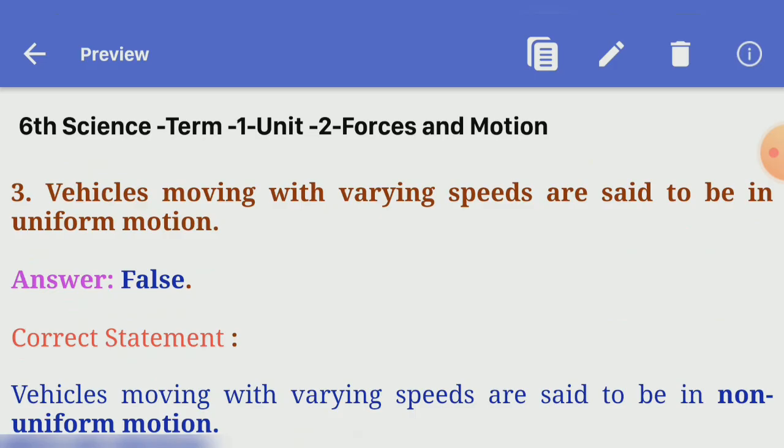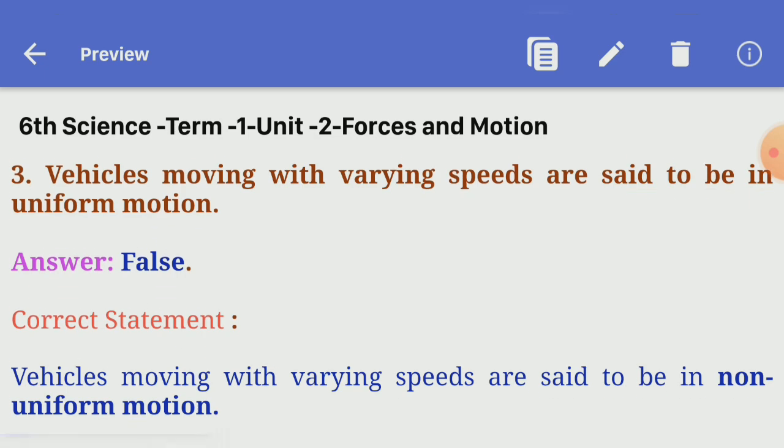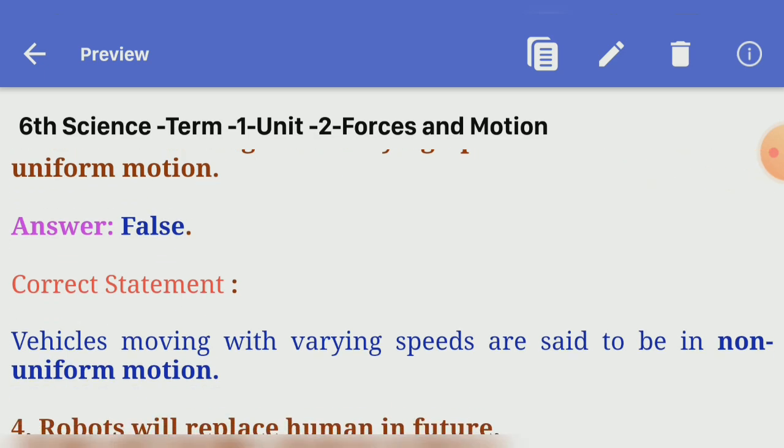Third one: vehicles moving with varying speeds are said to be in uniform motion. Answer: false. Correct statement: vehicles moving with varying speeds are said to be in non-uniform motion.